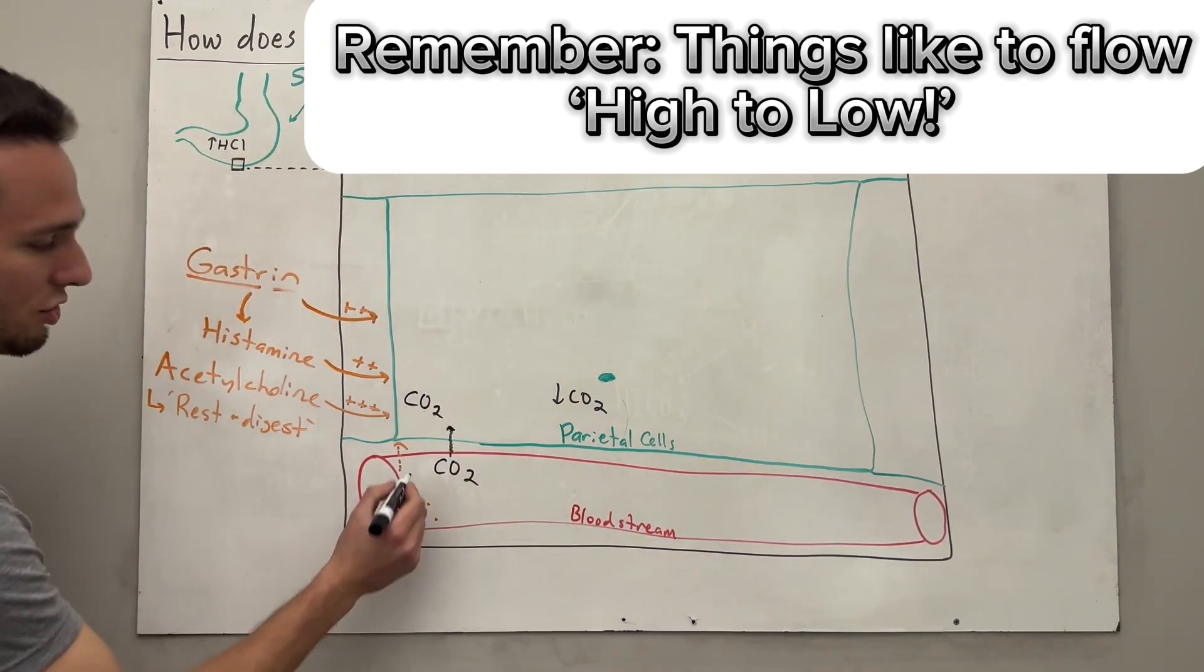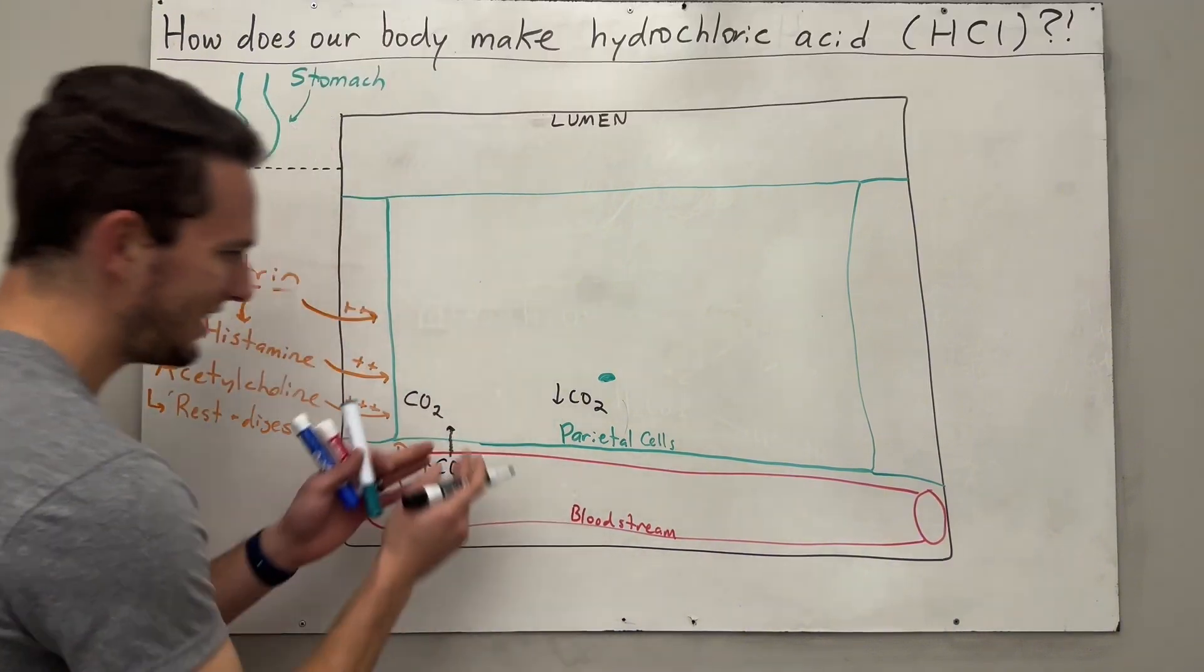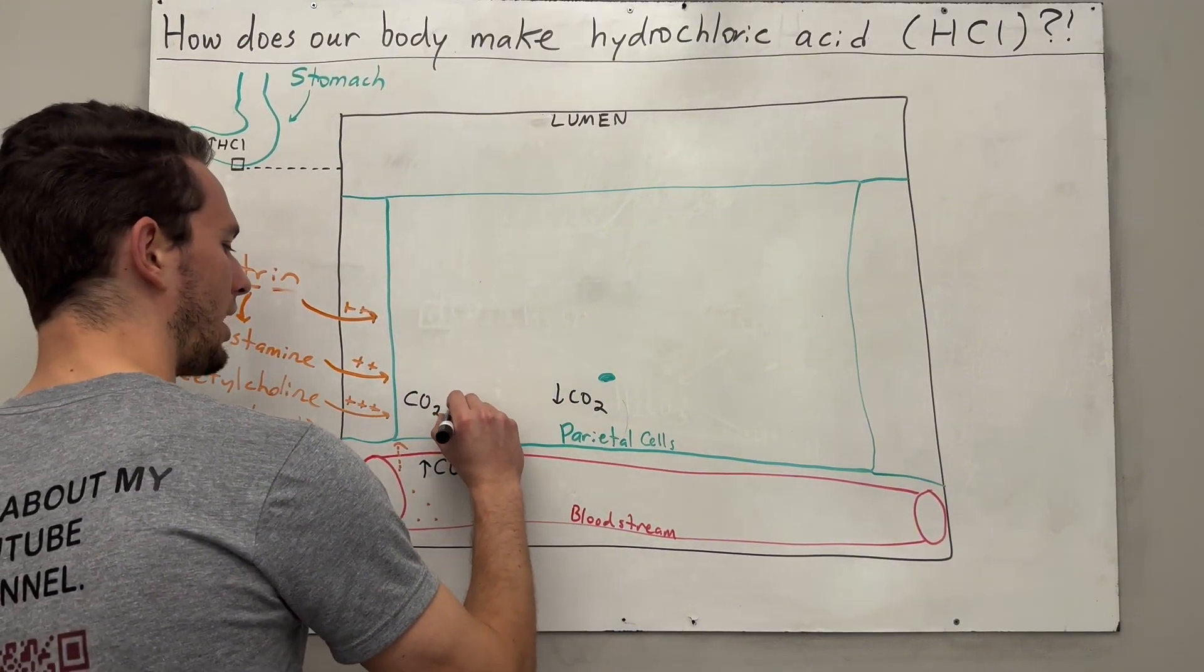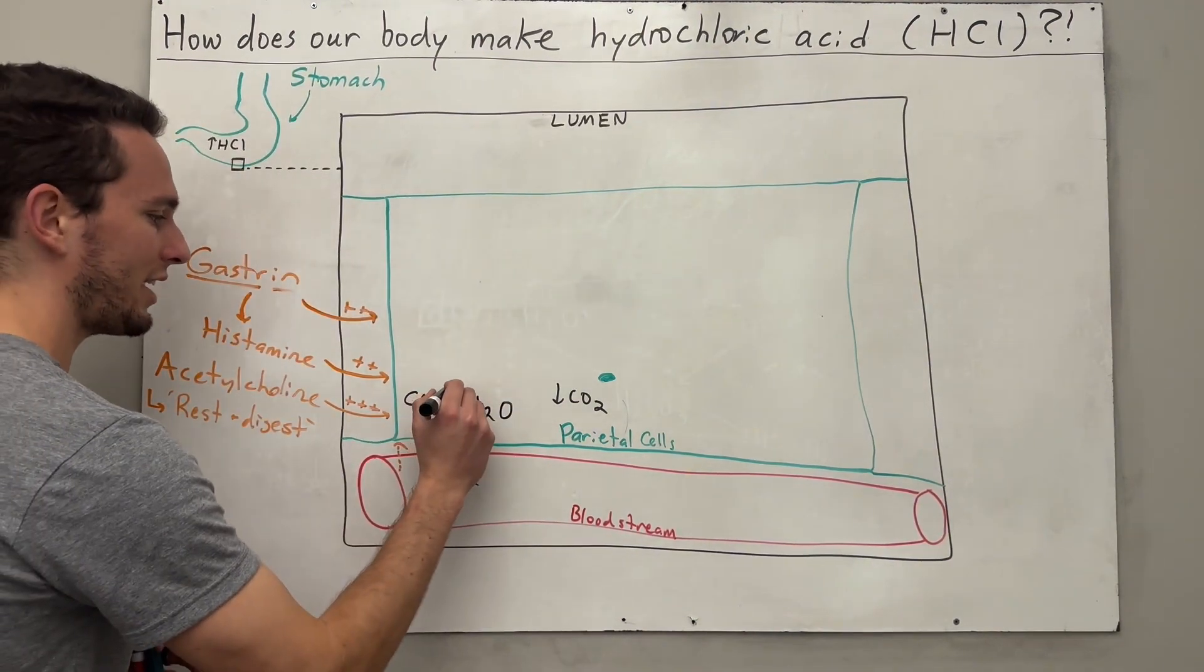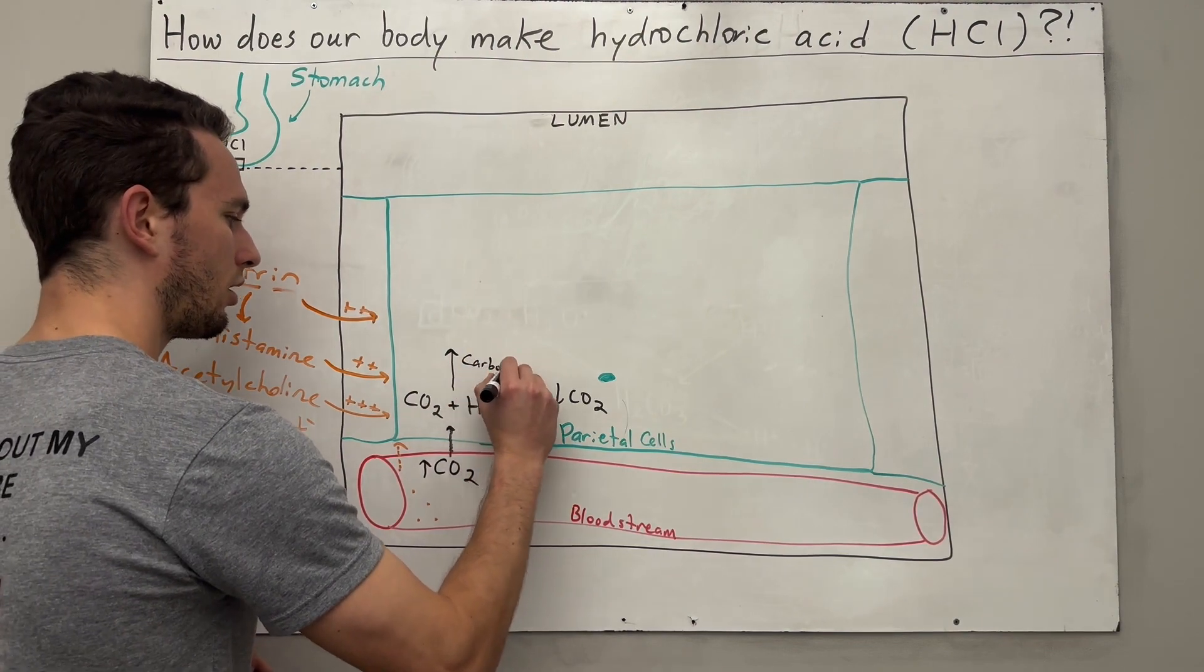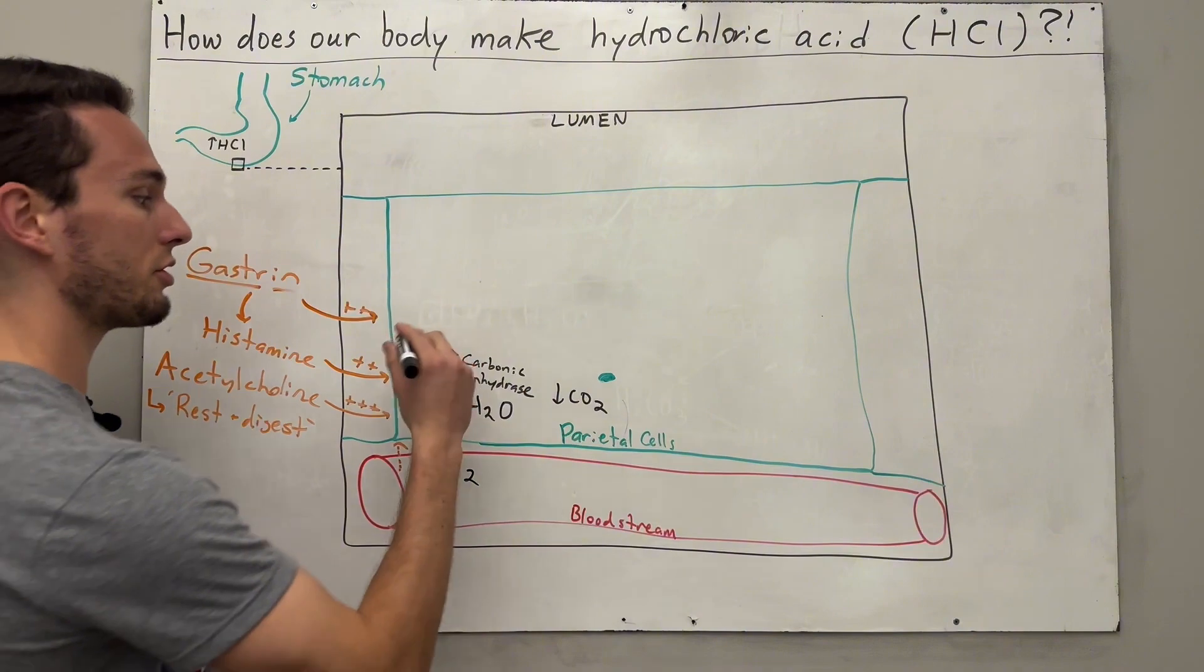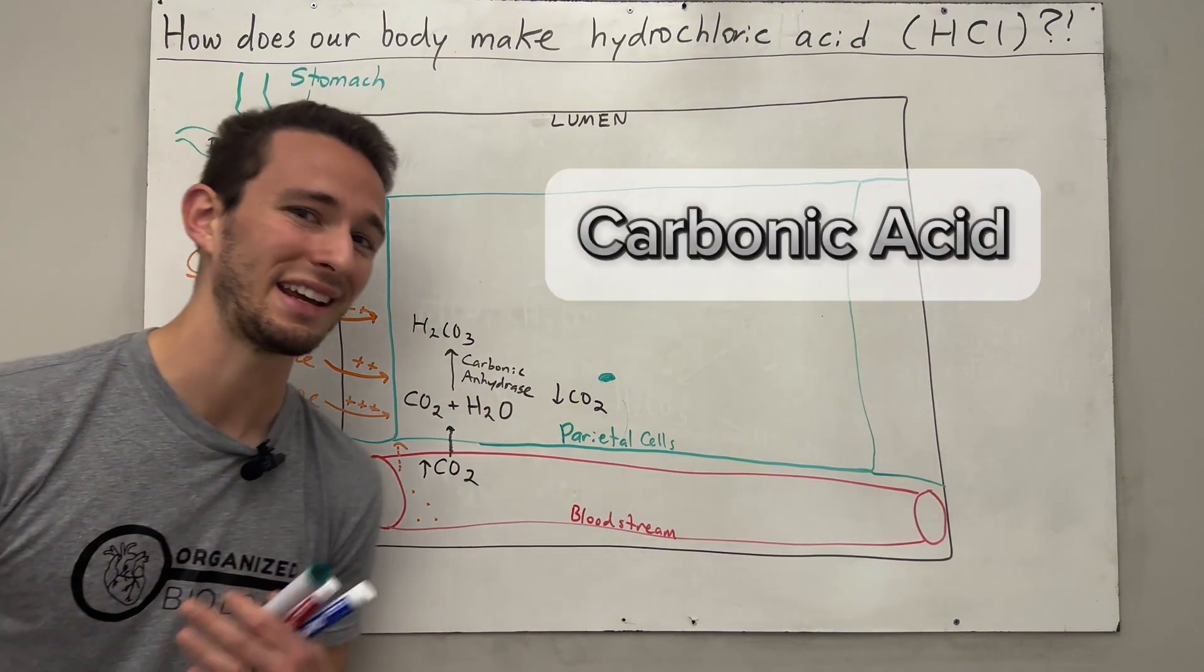This happens, simple diffusion, things moving from high concentration to low concentration. Once that occurs inside of the parietal cells, carbon dioxide will actually combine with a very common molecule of water. And this reaction will be catalyzed by an enzyme called carbonic anhydrase. Now this is just an enzyme that's going to basically staple these two molecules together to form a molecule called H2CO3, otherwise known as carbonic acid.